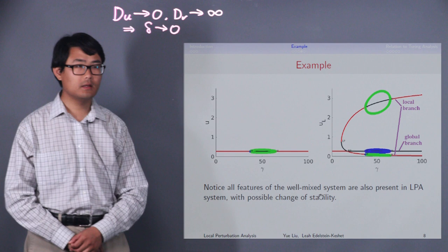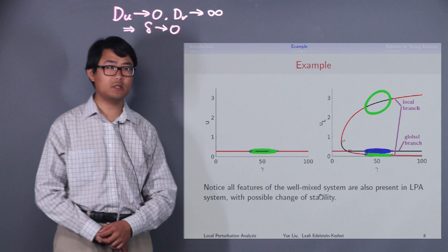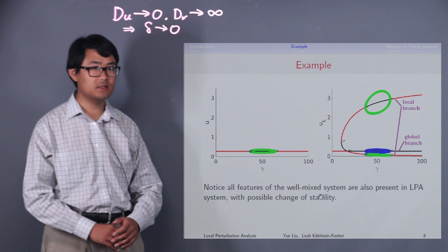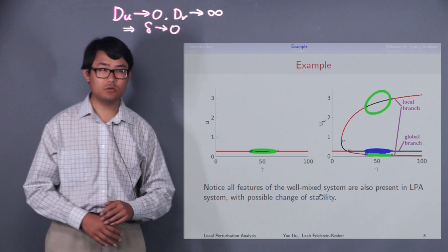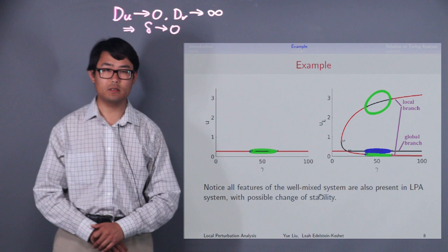Here I label the distinction between global branch and local branch. If the system is attracted to a local branch, that means UL equal to UG, and the spike decays back to the homogeneous state, and nothing interesting happens. If the system is attracted to a local branch, then UL does not equal to UG, and we can have interesting patterns to form.